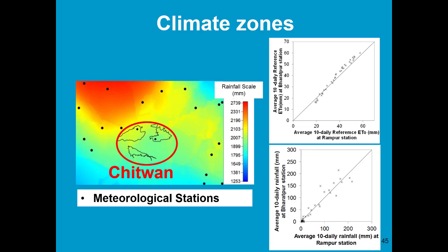The Rampur station and the Bharatpur station. By comparing 10-daily reference ET and 10-daily rainfall at those stations, we see that there is a huge similarity in climatic data.